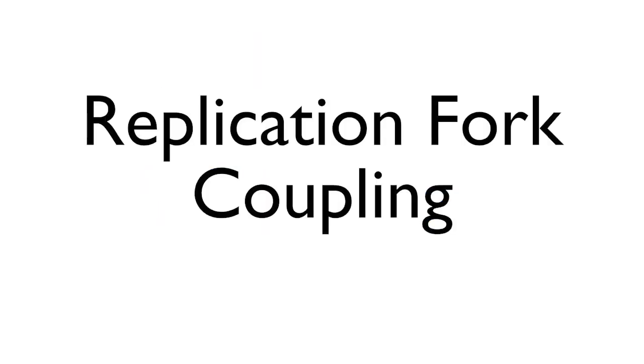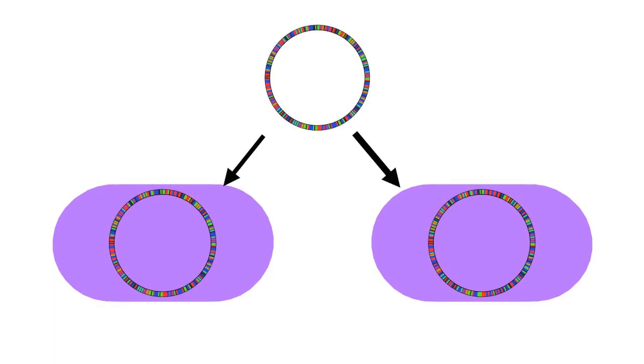During DNA replication, a DNA molecule is duplicated to generate two identical copies. The correct copying of DNA is of vital importance to the cell as errors that are introduced into the DNA may lead to heritable mutations that could be deleterious to the cell or organism.